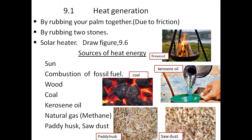There is activity 9.3 in your textbook: let's make a model of a solar water heater. Go through that activity and try to make one using some pipes. Next, the sources of heat — our main source of heat is the Sun. If you burn fossil fuels like kerosene oil, coal, diesel, or petrol, we can generate heat through combustion of fossil fuels.